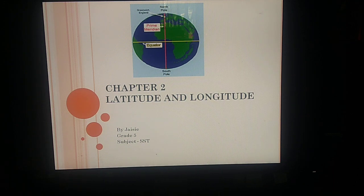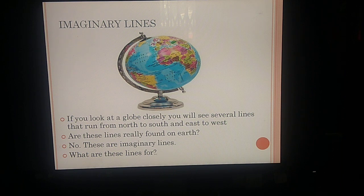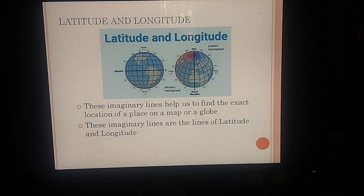Good morning children. Today we are going to study chapter 2: Latitude and Longitude. In the previous lesson we learned about globes and maps. Now we're going to learn how we can use latitude and longitude to read the globe and map. If you look closely at the globe on the screen, you will see lines running from north to south and east to west. These are imaginary lines — they do not actually exist on Earth. These imaginary lines help us find the exact location of a place on a map or a globe.